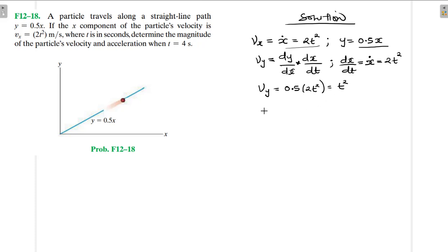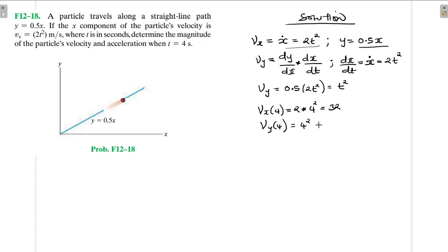With this information, v_x at t = 4 seconds gives us 2 × 4² = 2 × 16 = 32. And v_y at t = 4 seconds is equal to t² = 4² = 16.